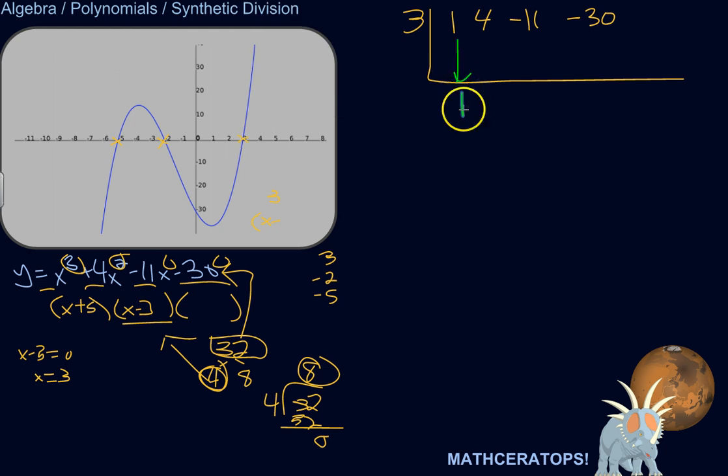Okay, so here's the pattern. 1 times 3 is 3. Add, I get 7. 7 times 3 is 21. Add down the column. 21 plus negative 11 is 10. 10 times 3 is 30. Negative 30 plus 30 is 0.